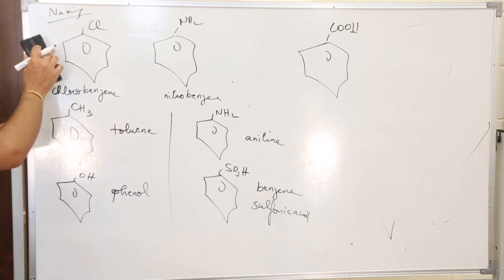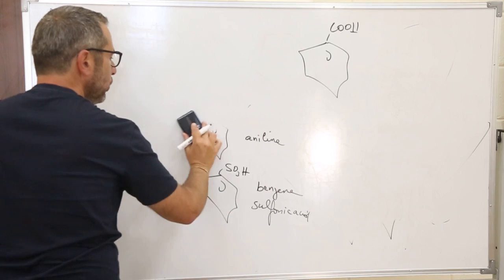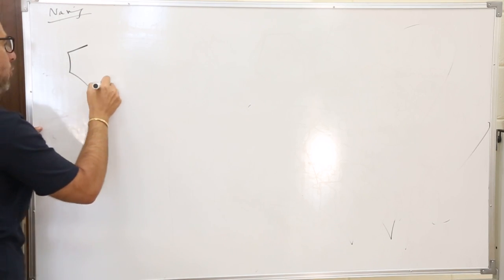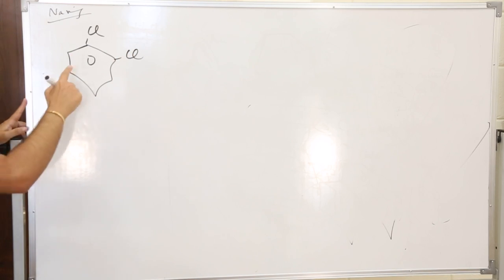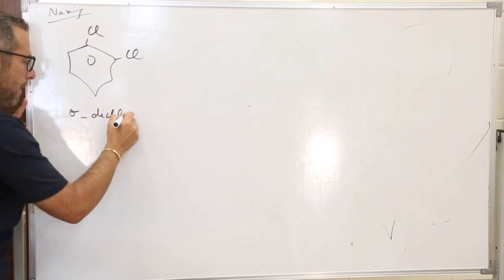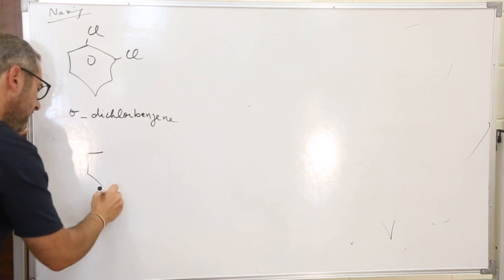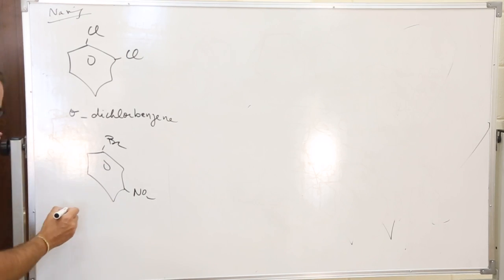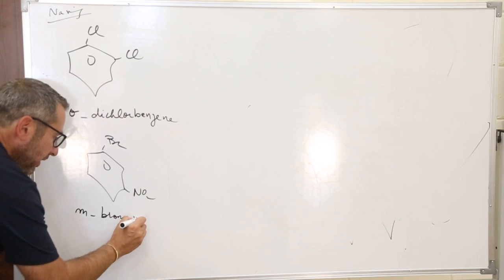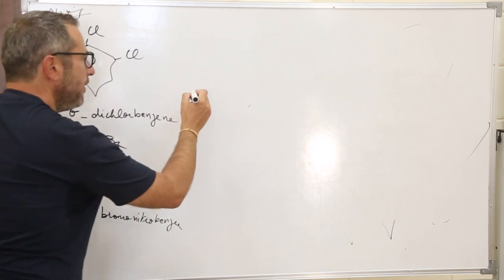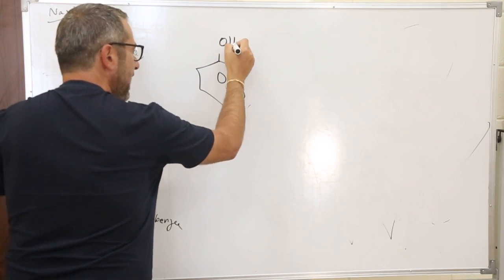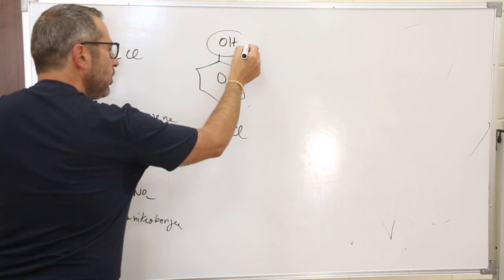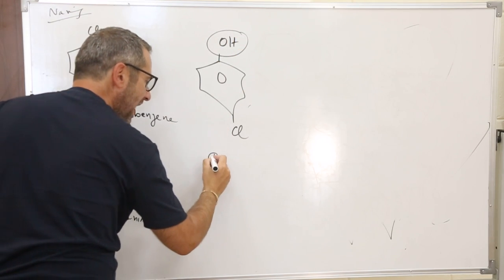If we have two substitutions, always use ortho, meta, or para. If the two substituents are identical, name it ortho-dichlorobenzene for example. If the two substituents are different, name them in alphabetical order but always use ortho, meta, or para — for example, meta-bromonitrobenzene. If one substituent gives a common name, use that as the base name — for example, para-chlorophenol.